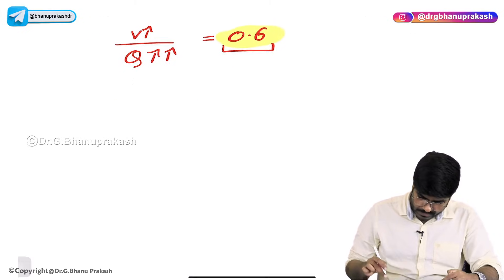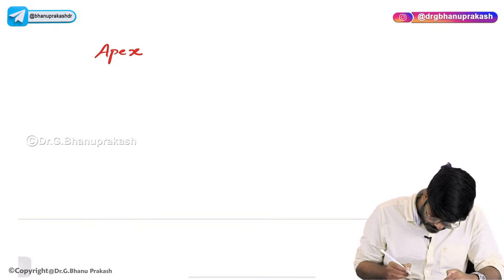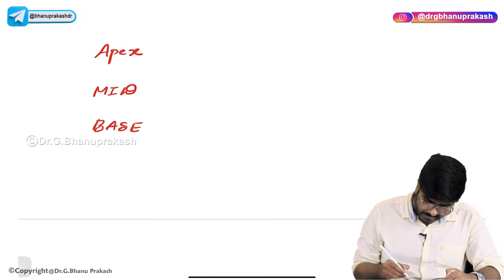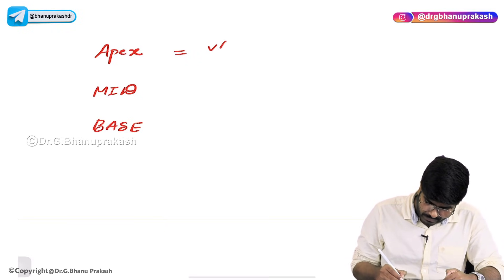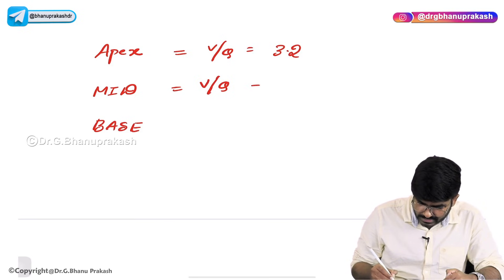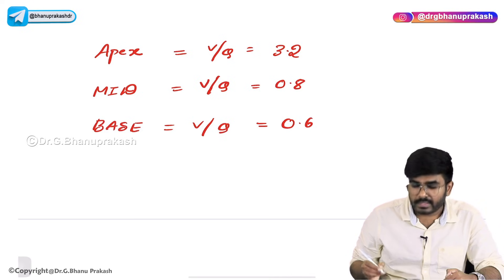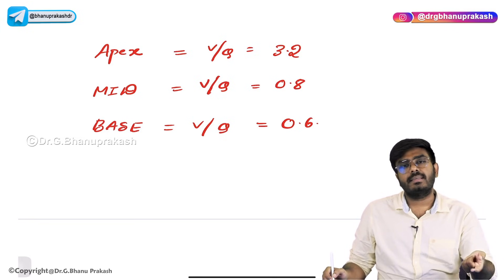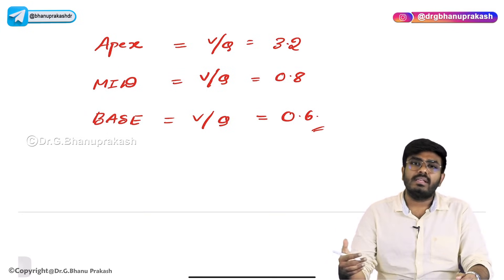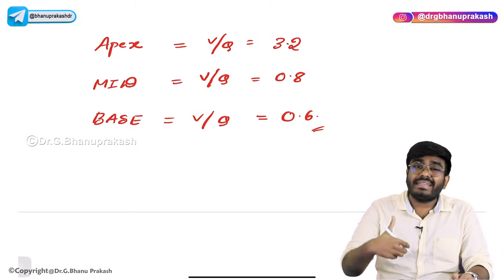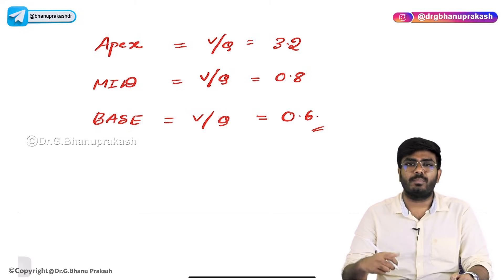So in the apex, middle lobes, and base, ventilation-perfusion ratios are different. V by Q in the apex is 3.2, in the middle lobes it is 0.8, and in the base it is 0.6. We have now seen the ventilation-perfusion ratios in different regions of the lungs. In the next video, we will discuss ventilation-perfusion mismatches and their examples. Thank you.